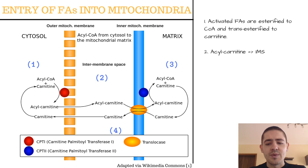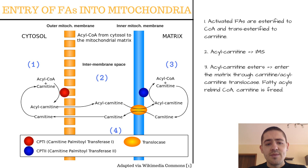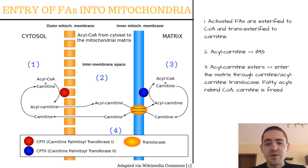Step two is when this preparation allows for the passage of acyl carnitine into the intermembrane space. In step three, acyl carnitine esters then move into the mitochondrial matrix by facilitated diffusion through carnitine acyl carnitine translocase.